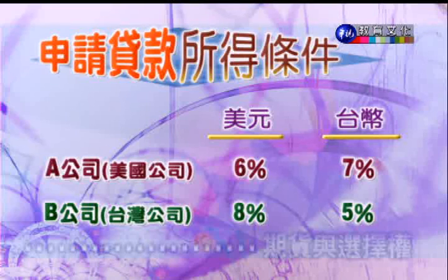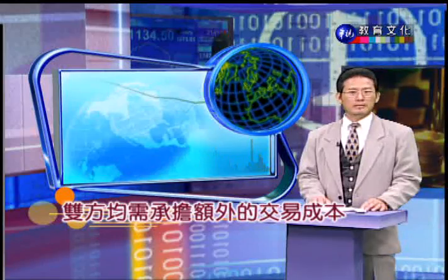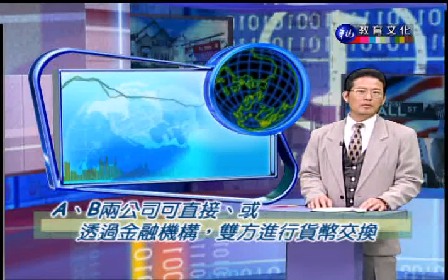当A公司想到台湾投资需要台币资金，B公司想进军美国需要美金，传统做法是A公司取得较低成本的美金再经由外汇体系转换成台币，B公司取得较低成本台币再换取美金，但这样双方都必须承担额外的汇兑成本。所以AB公司可以直接或透过金融机构双方来进行货币的交换。